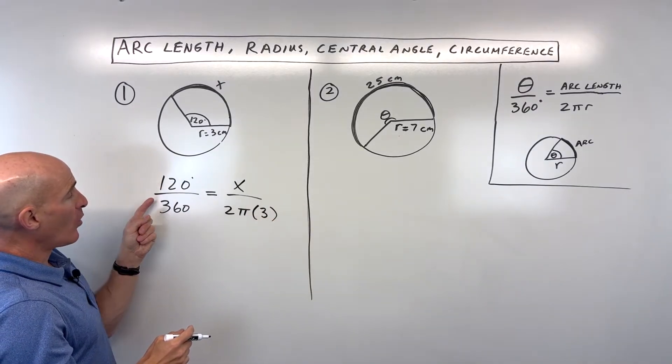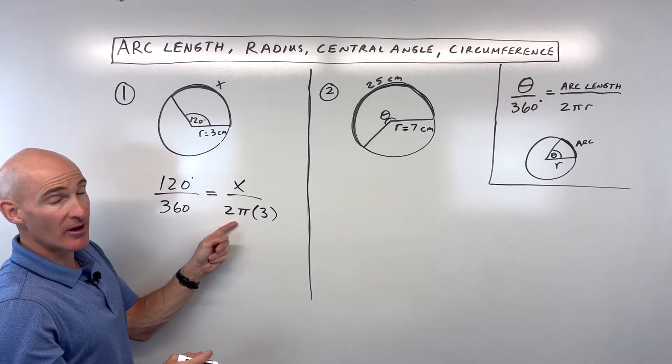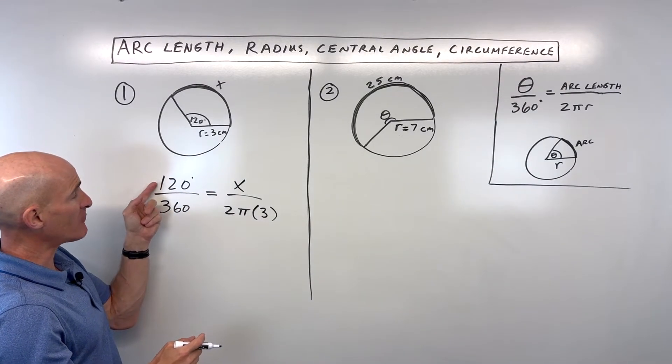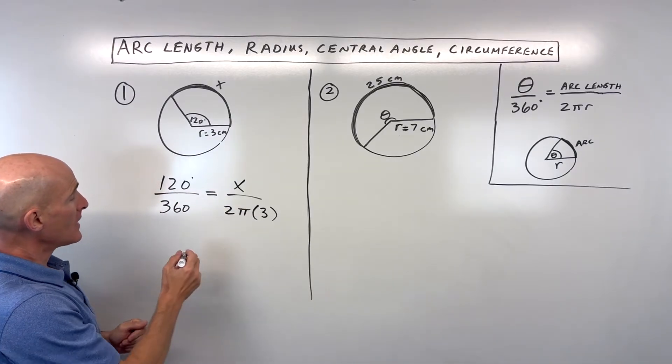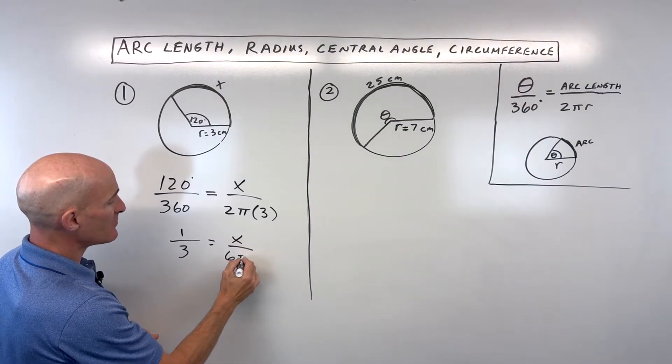You can see this is like one-third, so it makes sense that the arc length is one-third of the whole circumference. Now, I'm going to reduce this down a little bit, so this is 1 over 3 equals x over 6π.